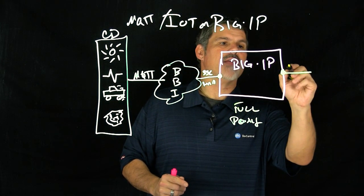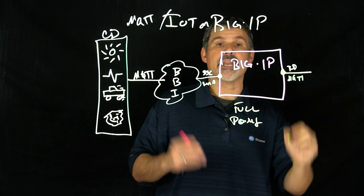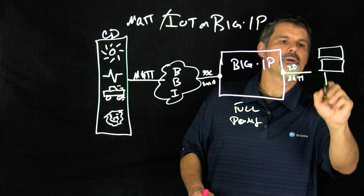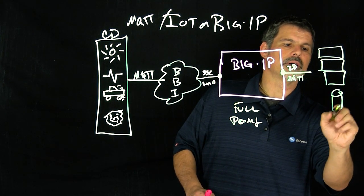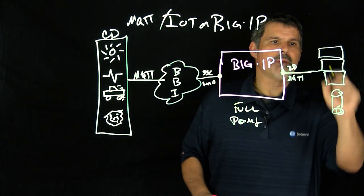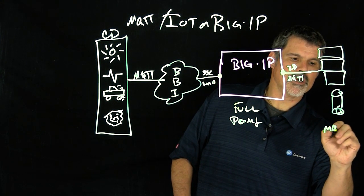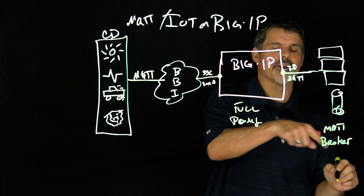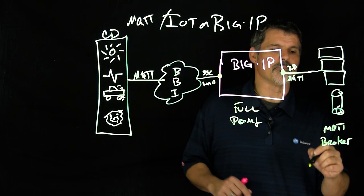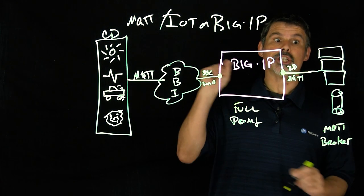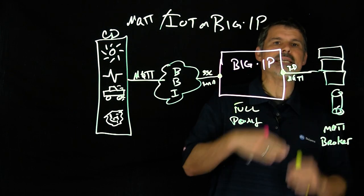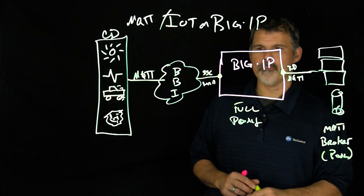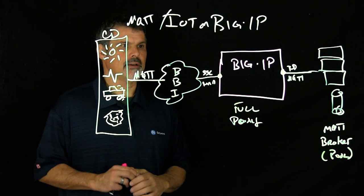Being a full proxy, the Big IP will create another TCP MQTT connection on the server side. On the back end here, we have our MQTT brokers. These MQTT brokers would actually be your pool on the Big IP device.